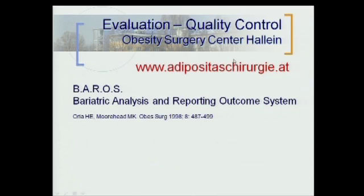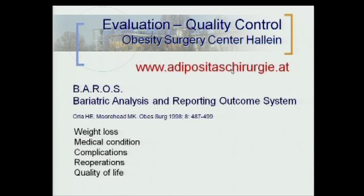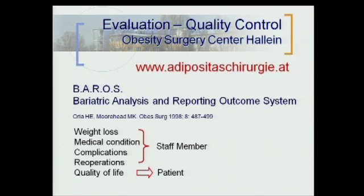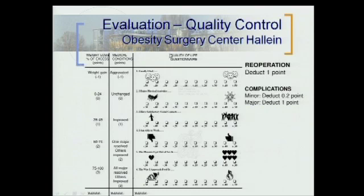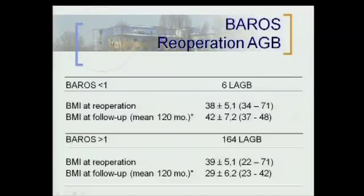Our quality control uses the Barrows score — a very simple one — covering weight loss, medical condition, complications, re-operation, and quality of life. Staff document weight loss and re-operations; the patient fills out the quality-of-life component. It is a very simple protocol for follow-up and quality control. A score less than one is considered a failure. Patients with a Barrows score less than one who still wanted the band are seen to gain weight after the procedure. We found the Barrows score to be a very suitable tool to determine whether the indication is for a band or a bypass. Patients with a Barrows score greater than one do benefit.